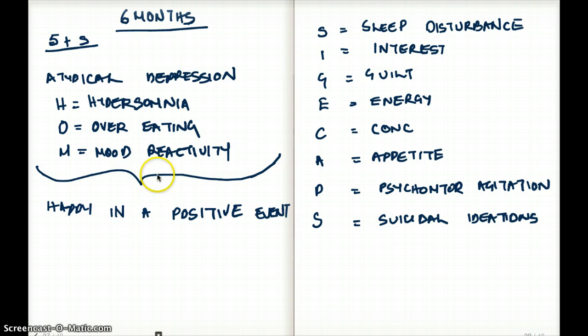Atypical depression can also happen for endogenous reasons. For example, endogenously, they don't have the hormones to make them feel happy. So atypical depression is often due to endogenous lack of hormones.